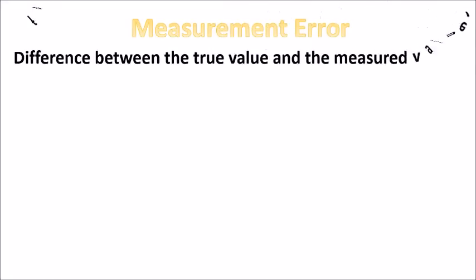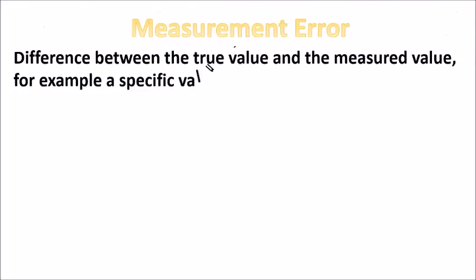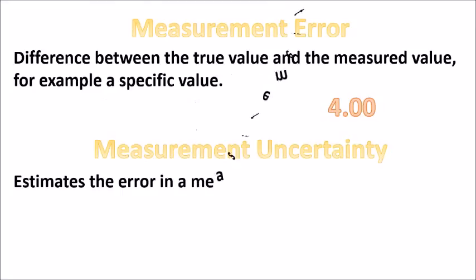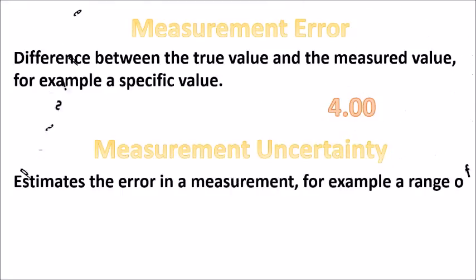Measurement error is the difference between the true value and the measured value, for example, a specific value. Measurement uncertainty estimates the error in a measurement, for example, a range of possible values of the error.